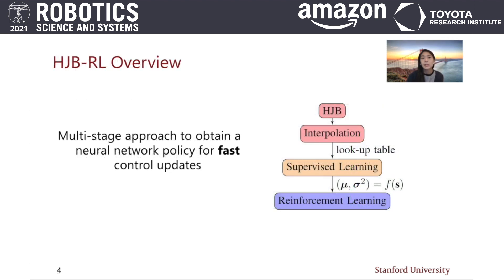Our method combines the advantages of both HJB and reinforcement learning methods by using a multi-stage approach to obtain a neural network policy that can provide fast control updates.